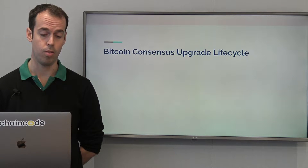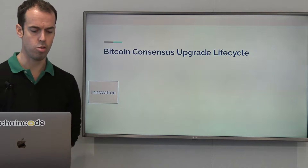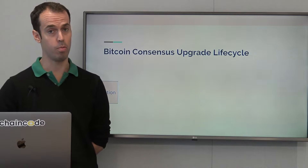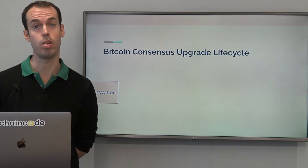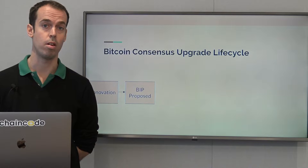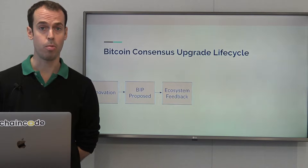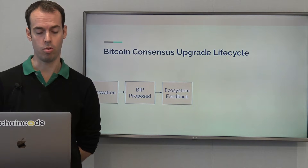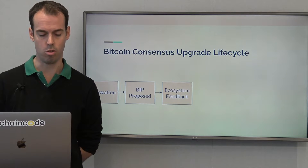Whereabouts are we in the lifecycle of this upgrade? Bitcoin consensus changes follow roughly this pattern: there's some kind of innovation — in this case, it's Schnorr signatures and Taproot. A BIP is proposed, and that was done for BIP Schnorr back in May. There's then a feedback process where anyone in the Bitcoin community is able to give feedback on what they think of the proposal and any suggested changes.